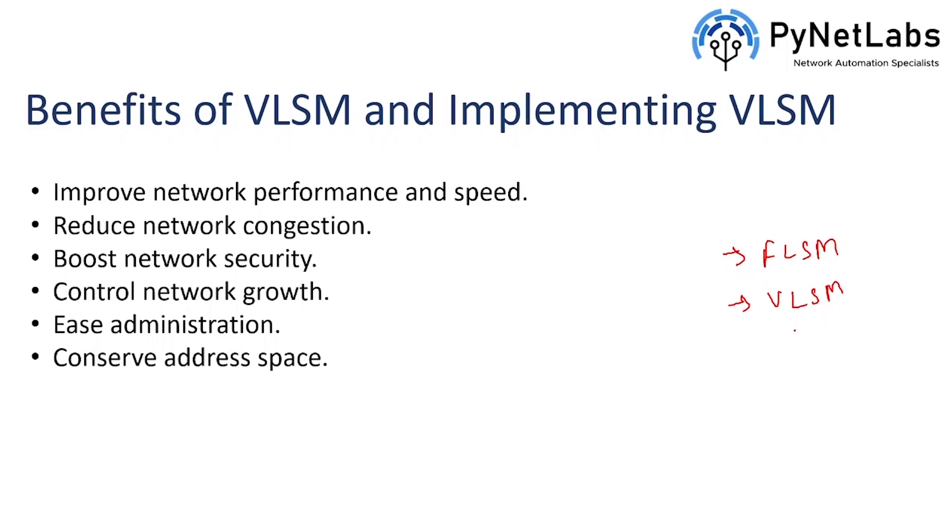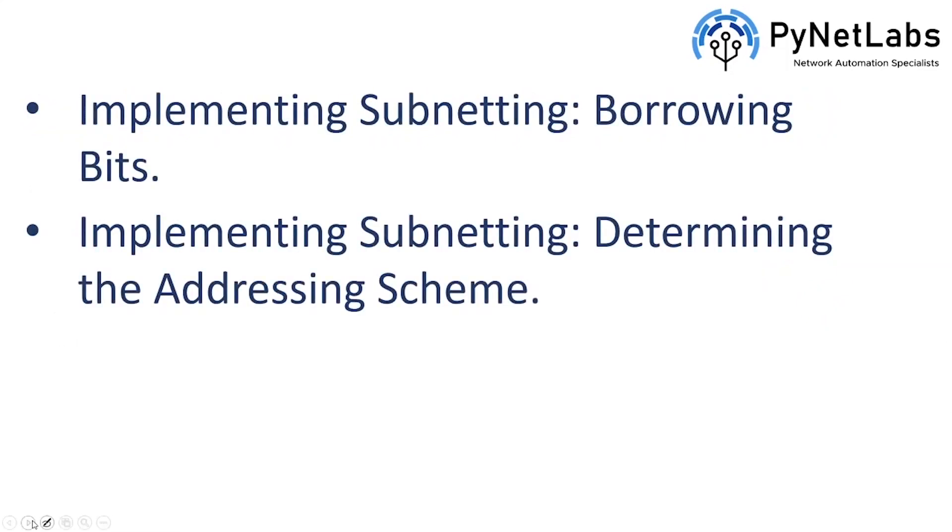There are some benefits of using VLSM and implementing VLSM over FLSM which are like it improves the network performance and speed. It reduces the chances of network congestion. It boosts the network security, controls the network growth. It eases the administration and management. And then it also conserves the address space. So it is better to basically use VLSM over FLSM. Then the next thing which we need to talk about would be how subnetting works and how it is calculated. So let's see some examples of that.